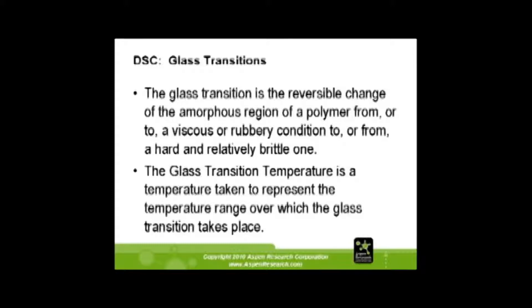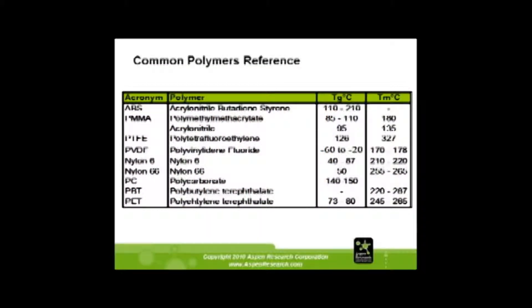Glass transition is reversible, and glass transition is taken over a representative of the temperature range for which the transition takes place. Here are some common polymer references. Polycarbonate has a glass transition — Tg stands for glass transition, Tm stands for melting — polycarbonate has a glass transition between 140 and 150, and there's nothing listed for the Tm, so no melting point.